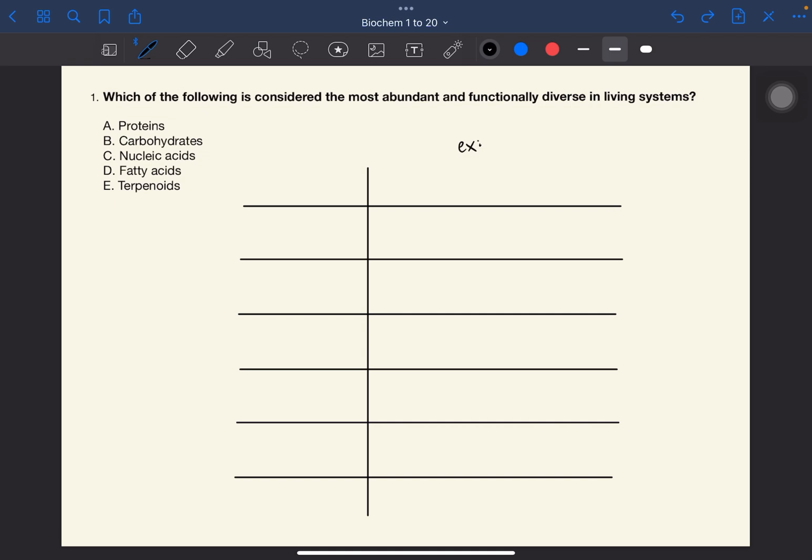Number one, which of the following is considered the most abundant and functionally diverse in living systems? The answer to this question is A, proteins.